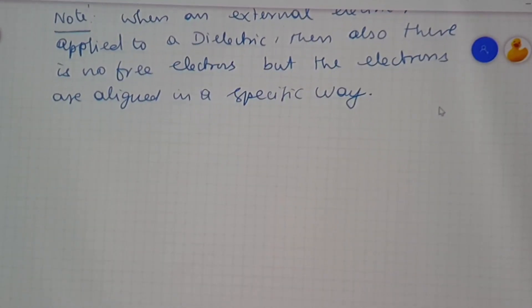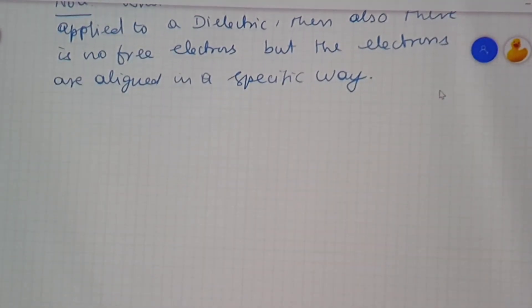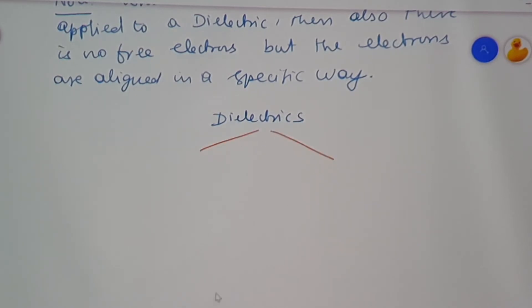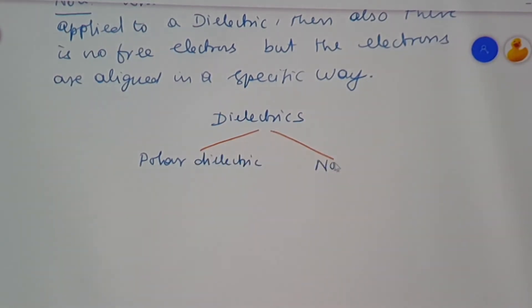So this we are calling dielectrics or insulators. When considering dielectrics, there are two types available. One is polar dielectric, and another is non-polar dielectric.